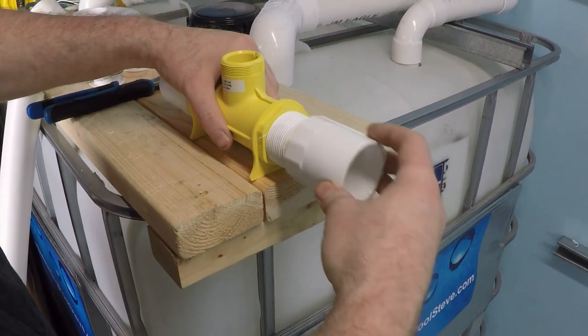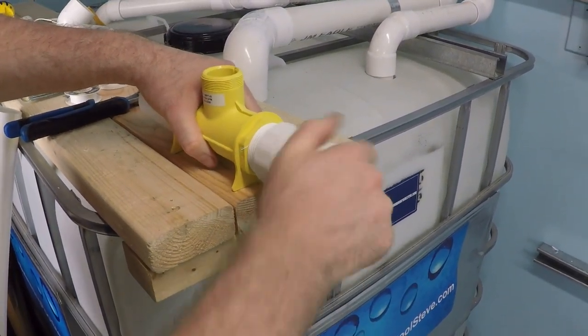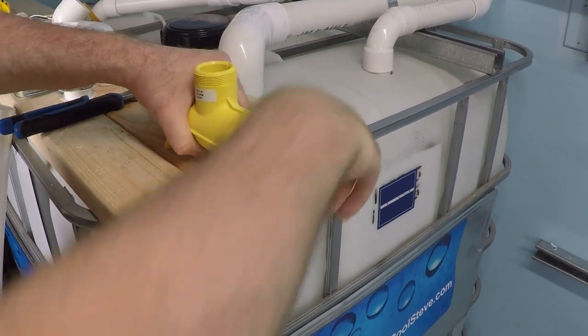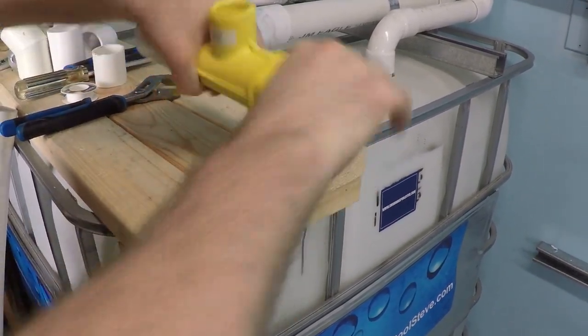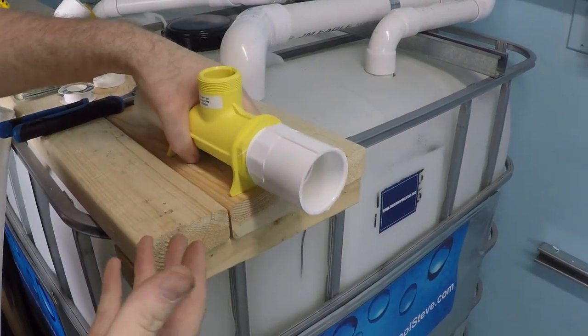The way that you would go about something like this is apply the Teflon tape like you saw me do, and then we're going to go hand tight at first. Now that's relative, right? There's different strengths, but we're all going to be about the same, which is to say it's pretty tight.